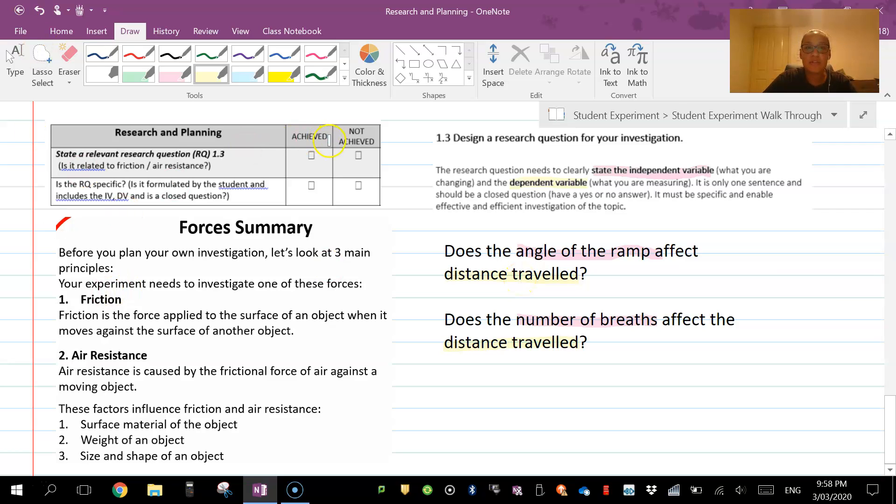When you're doing your checklist: is your research question relevant to the concepts of force, friction, and air resistance? Does it include an independent variable (IV) and dependent variable (DV)? Is it a closed question? Closed questions are yes or no.